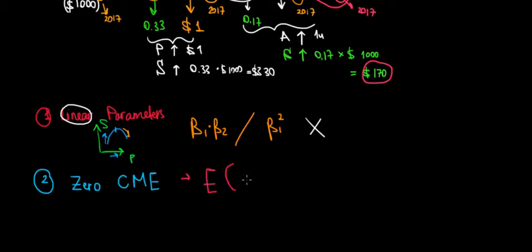The expected value of the error term at a certain point in time, given any independent variable at any point in time. So let's call that XI, any independent variable at any point in time, let's call that any point in time for instance M, must be equal to zero.